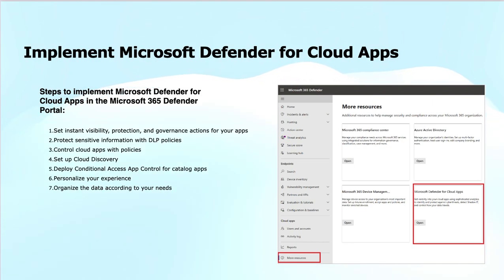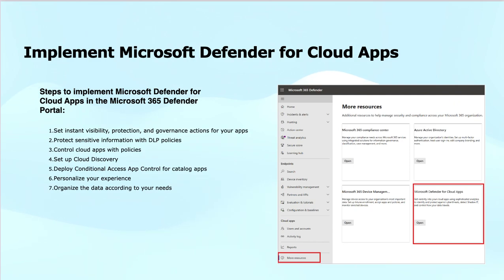Talking about implementing Microsoft Defender for Cloud Apps, the steps to implement it in the 365 Defender portal are: first, set instant visibility, protection, and governance actions for your applications. Second, protect sensitive information with Data Loss Prevention — DLP — policies. Third, control cloud applications with policies. Fourth, set up cloud discovery — application discovery.